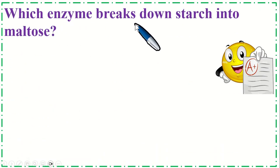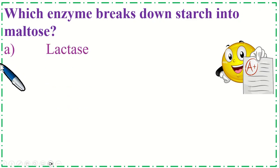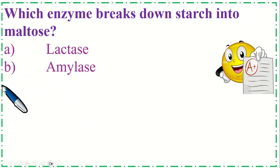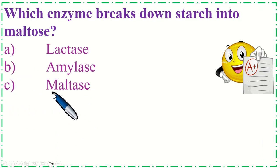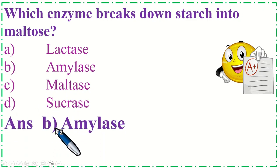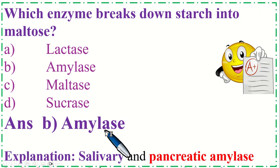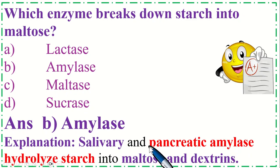Which enzyme breaks down starch into maltose? Option A: Lactase, B: Amylase, C: Maltase, and Option D: Sucrase. The correct option is B, Amylase. Salivary and pancreatic amylase hydrolyze starch into maltose and dextrin.